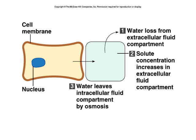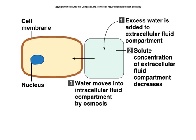Because water can travel freely through the cell membrane, water will be drawn out of the cells into the extracellular fluid compartment, continuing to move until the osmolarity inside the cell equals the osmolarity in the surrounding fluids. Similarly, if we add water to the extracellular fluid compartment, we dilute that solution — the osmolarity goes down. Because the concentration of water is now higher outside, it will move from the extracellular fluid into the cells by osmosis.